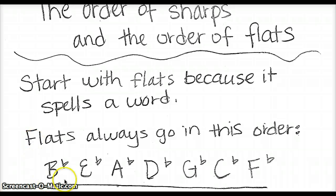The flats always go in this particular order. That means that if you are looking at one flat in the key signature, it has to be a B flat. And if you're looking at two flats in the key signature, it has to be B flat and E flat.